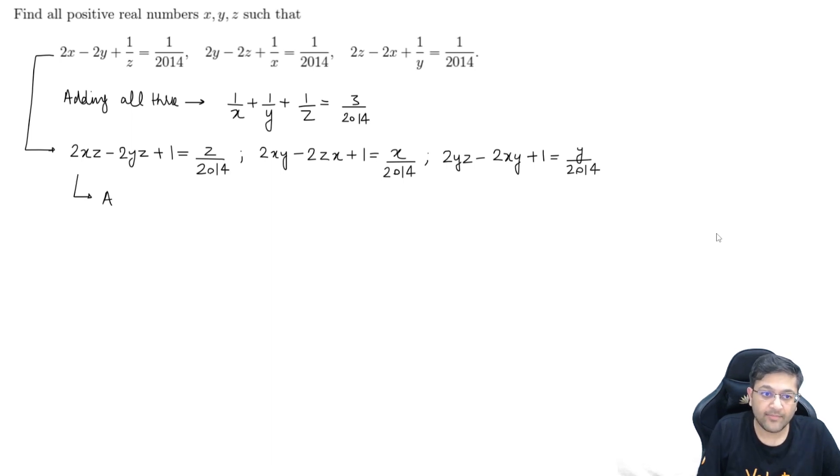But now, add these three. What you will get now? Therefore, guys, now this time around 2xy, 2yz and 2zx will get cancelled. On the left-hand side, you will get 3. On the right-hand side, you will get x plus y plus z in the numerator. Those terms will get added because denominator is the same, divided by 2014. This is what you will get.